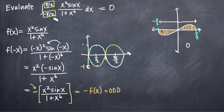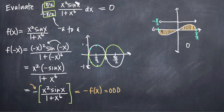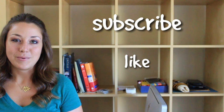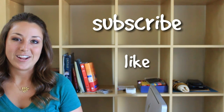So that's it. Because we're evaluating on the range negative a to positive a and we've identified the function as odd, the integral equals 0. I hope you found that video helpful — if you did, like this video and subscribe to be notified of future videos.